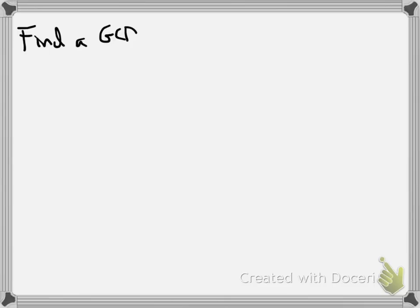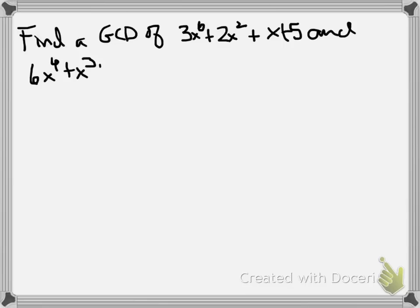Okay, so let's do an example of finding the greatest common divisor of two polynomials using the Euclidean algorithm. We're going to start with 3x^6 + 2x^2 + x + 5 and 6x^4 + x^3 + 2x + 4 in F_7 of x.